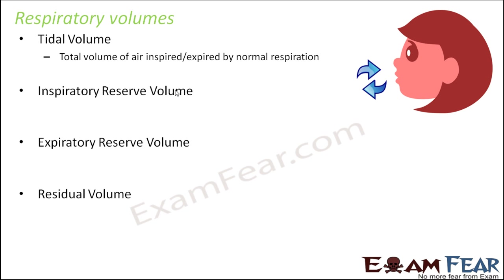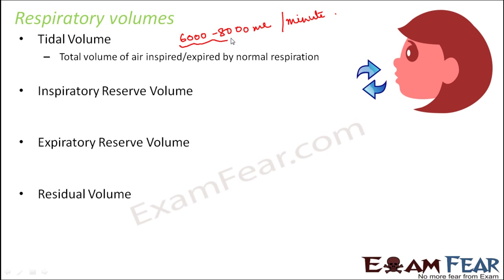Normally, in a healthy adult human being, tidal volume is around 6000 to 8000 milliliters of air per minute. So in one minute, this much amount of air is inspired or expired — either taken in or given out.